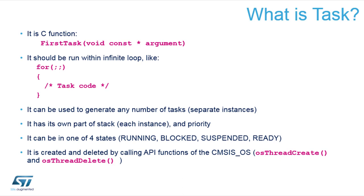It doesn't have any place where to return, and it gets an argument — that's a void constant pointer. So you can pass any pointer to anything. Typically it's an initialization value. It can be a number typecasted to a void pointer, or it can be a pointer to a structure. Very often it's null.